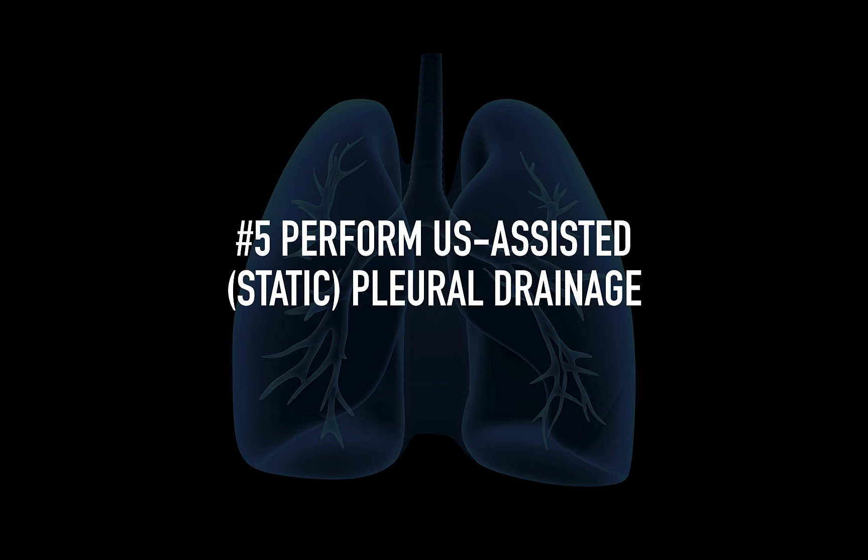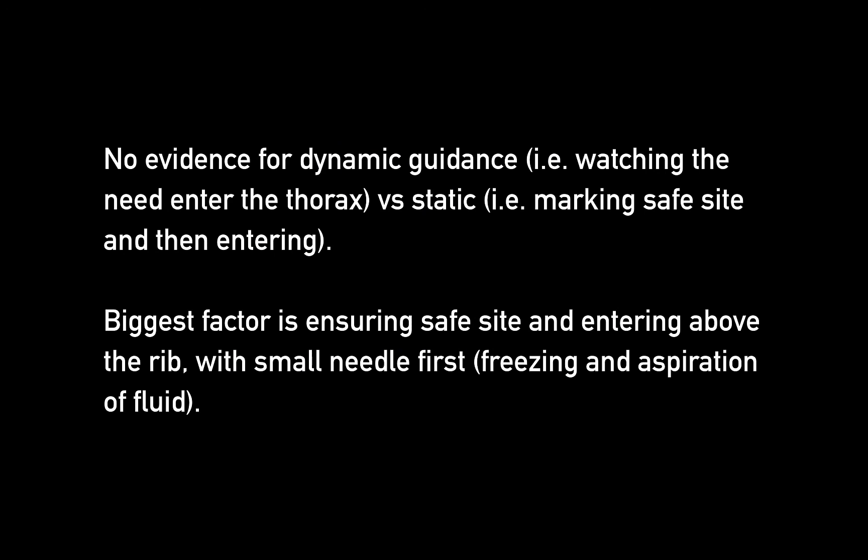I recommend performing ultrasound-based pleural drainage in the static format. Dynamic guidance, such as what you'd see in vascular access, is more challenging in the thorax. Focus on hitting that rib and going over it to mitigate risk. Place the patient in the position you'll be doing the scan in, find that optimal site, mark the access site, then enter with the small needle for freezing and the bigger needle for a Seldinger technique.